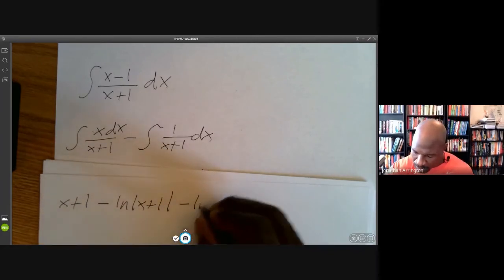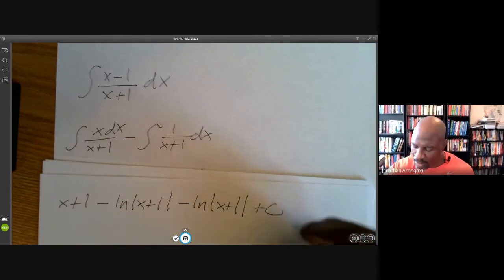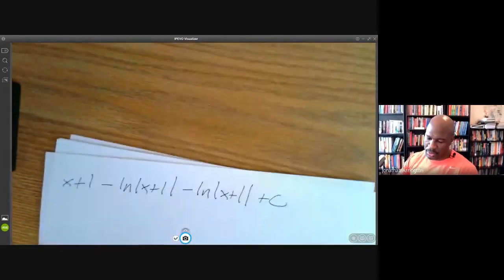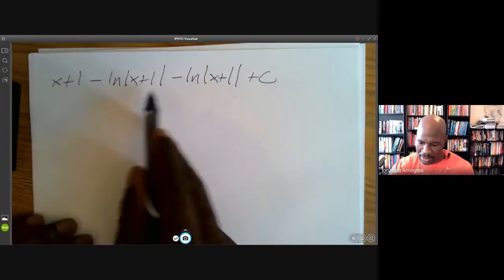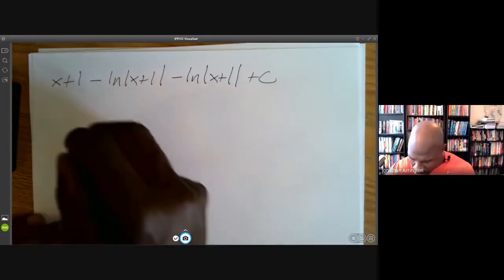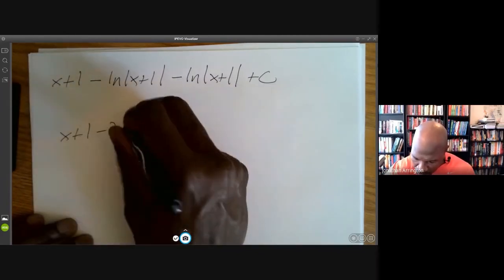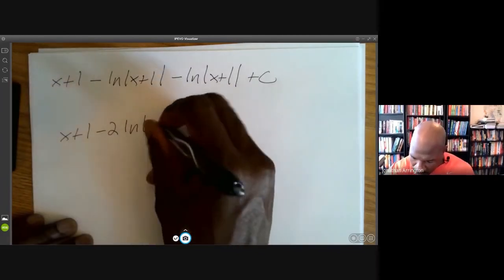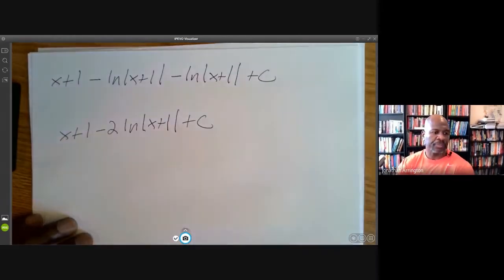Plus some constant. So that's what we have there. Of course we can combine these two together, and we'll have x+1 - 2ln|x+1| + C.